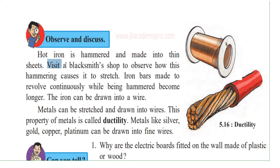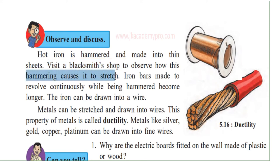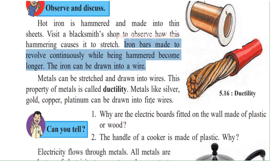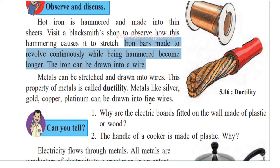If possible, visit a blacksmith's shop. A blacksmith is a person who works with iron — he is called a blacksmith; one who works with gold is called a goldsmith. Visit a blacksmith's shop to observe how hammering causes the metal to stretch. Iron bars made to revolve continuously while being hammered become longer. The iron can be drawn into wires — this is how thick or thin wires of various metals are made.